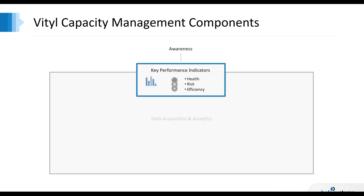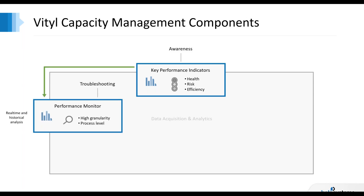On top of this, we have a number of components. We have Key Performance Indicators, which is a high-level view of your resources from a health, risk, and efficiency perspective. It's meant to bring awareness to those systems, services, or applications that need extra attention because they are at the verge of having a performance problem or are used inefficiently. We also have a Performance Monitor, which is our root cause analysis and real-time and historical data analysis tool, where you can bring in data from any of the data sources to look at data with high granularity down to process level, analyze exactly what went on during a specific time period, and do correlation between multiple systems.